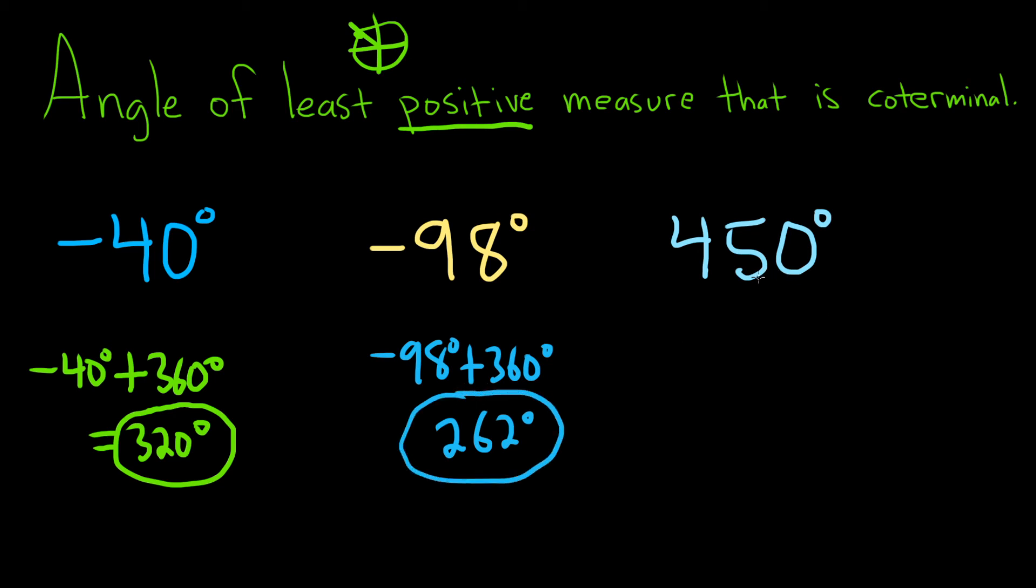Now in this case here, it's already positive. So we want to see, can we make it smaller? So if you do 450 and you subtract 360,